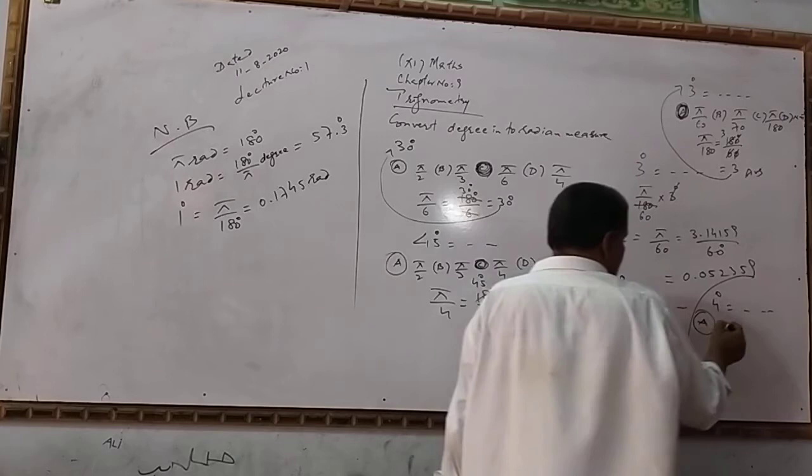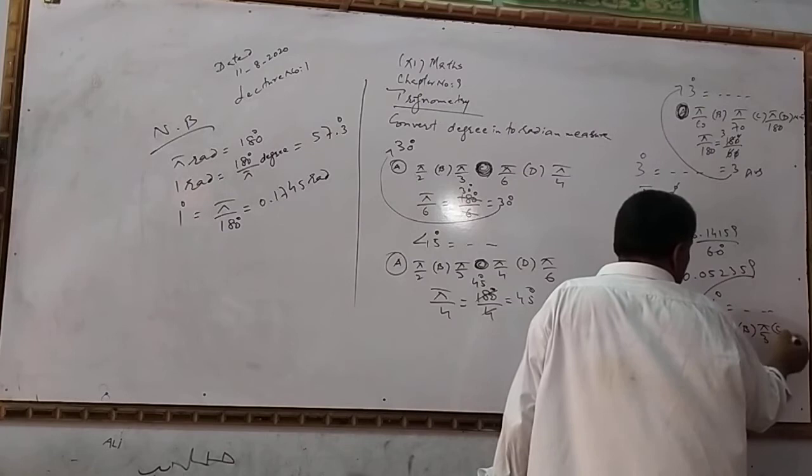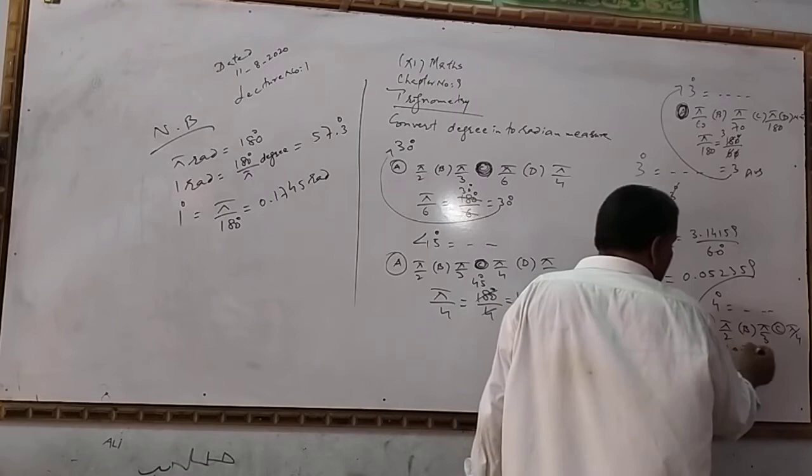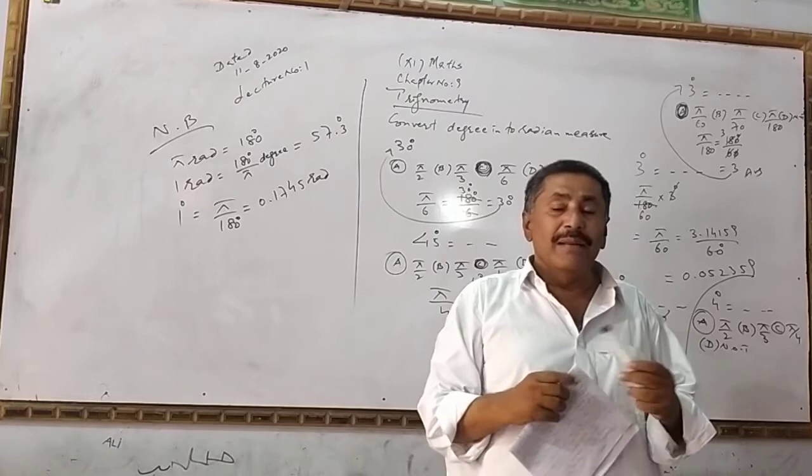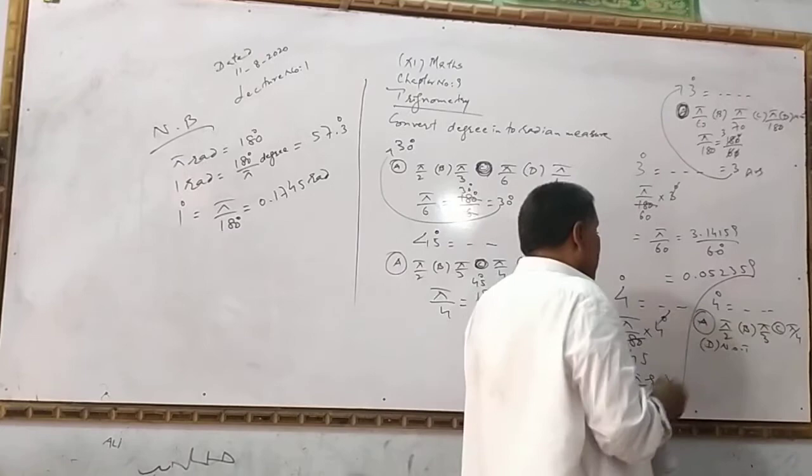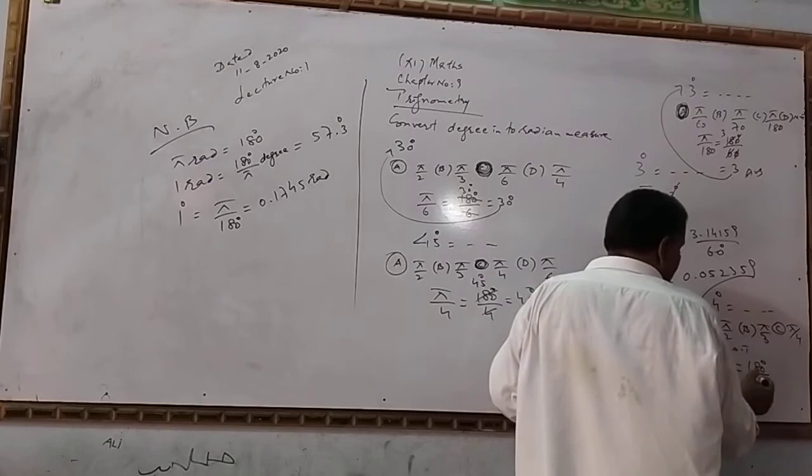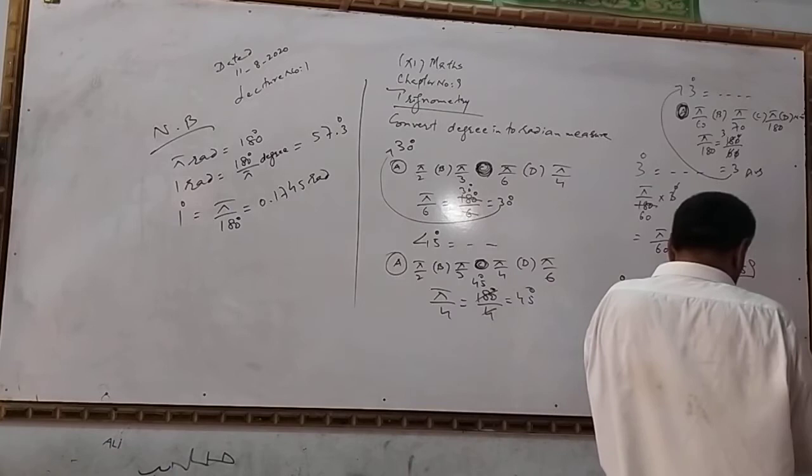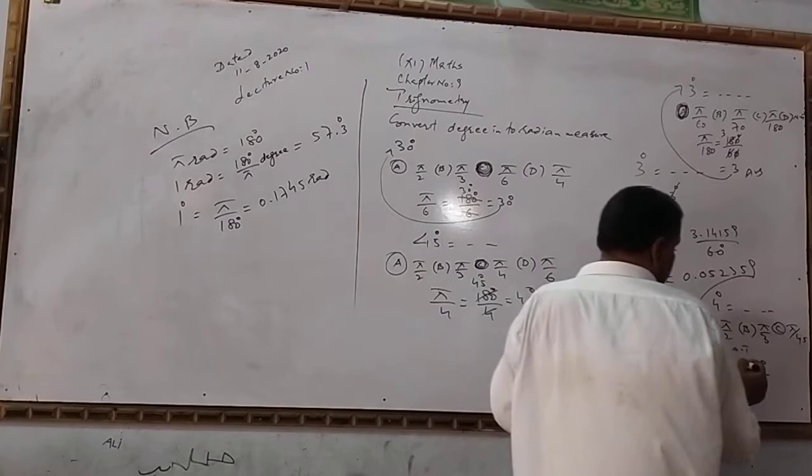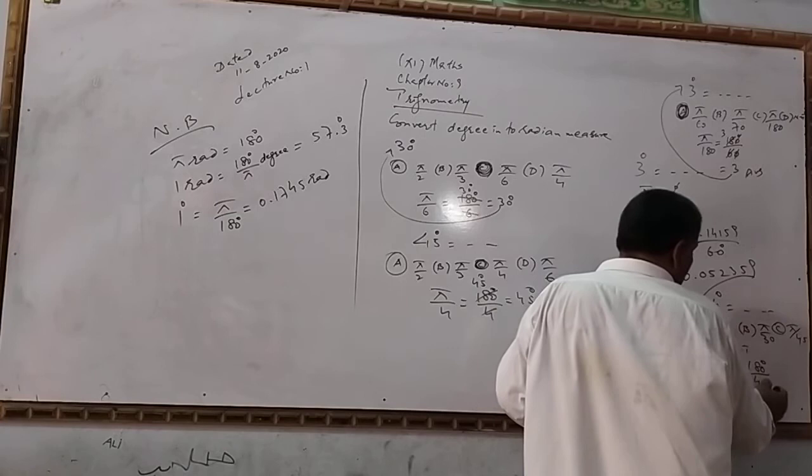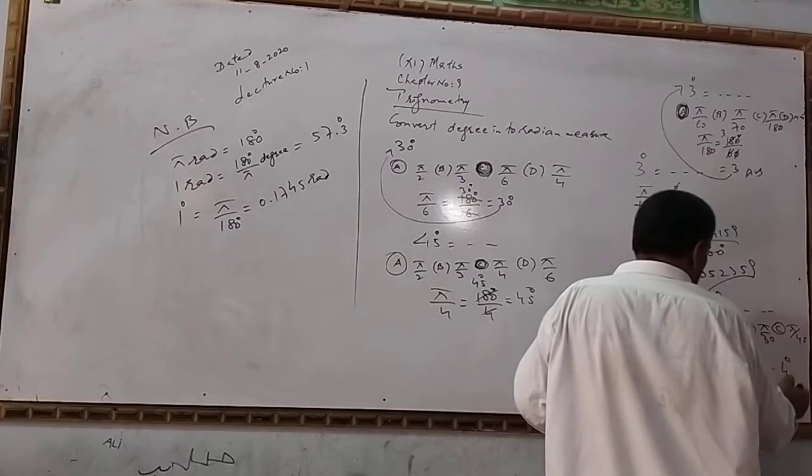This is the 45 degree equation. The options are: A) π/2, B) π/3, C) π/4, D) none of these. This is π/180 divided by 45, which equals π/4. 45 degrees equals π/4.